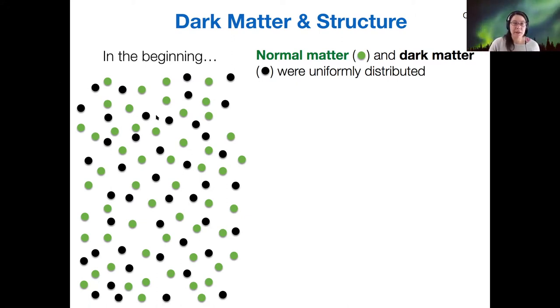So we've got normal matter that's denoted by these green particles and the dark matter by these black particles. And we're assuming that they're more or less homogenous and isotropic across all of space.